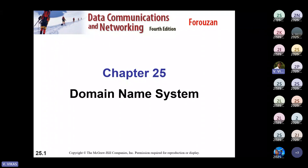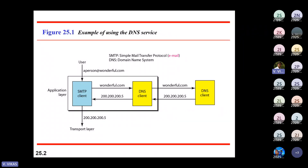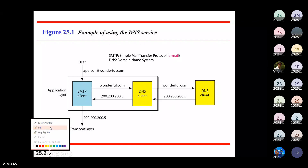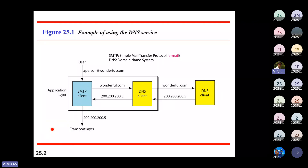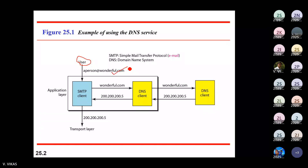That is called the Domain Name System. What DNS does is try to map between an IP address and a domain name. For example, you are sitting in front of a computer and trying to access a website — wonderful.com.